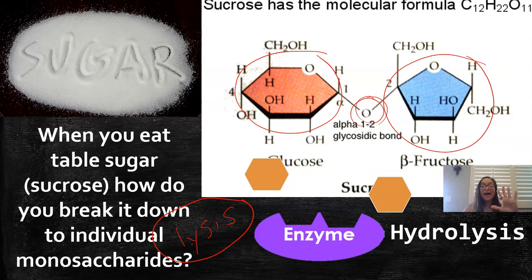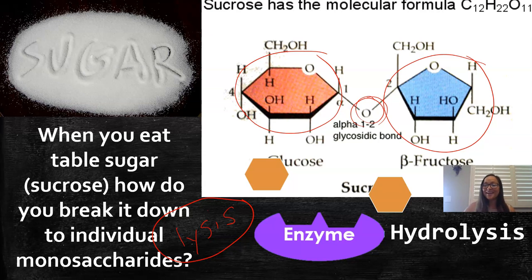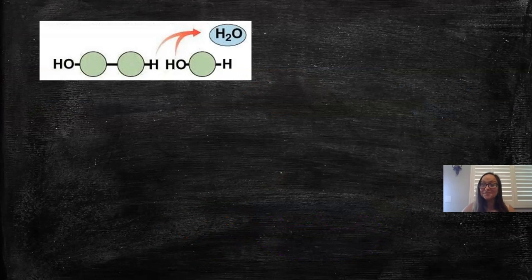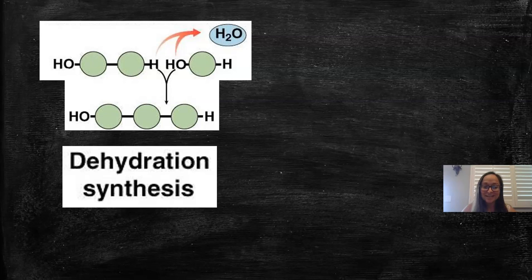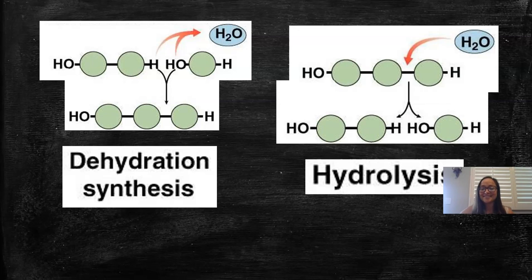To summarize: Topic 1.2 covers the five elements of life — carbon, hydrogen, and oxygen in lipids and carbohydrates; carbon, hydrogen, oxygen, and nitrogen in proteins; and carbon, hydrogen, oxygen, nitrogen, and phosphorus in nucleic acids. Topic 1.3 covers dehydration synthesis and hydrolysis. That is the end.